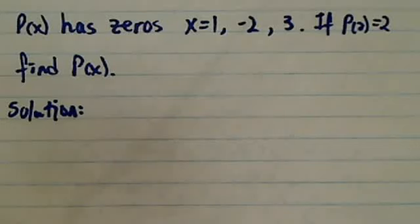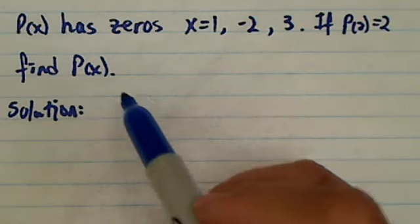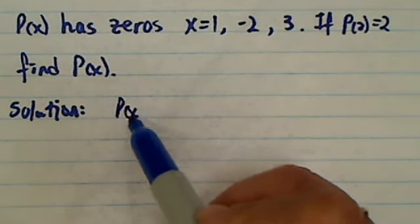So P(x) has zeros x=1, -2, and 3. If P(2)=2, find P(x). A typical thing a lot of students get started is they know if it has zero then they'll say well it's...